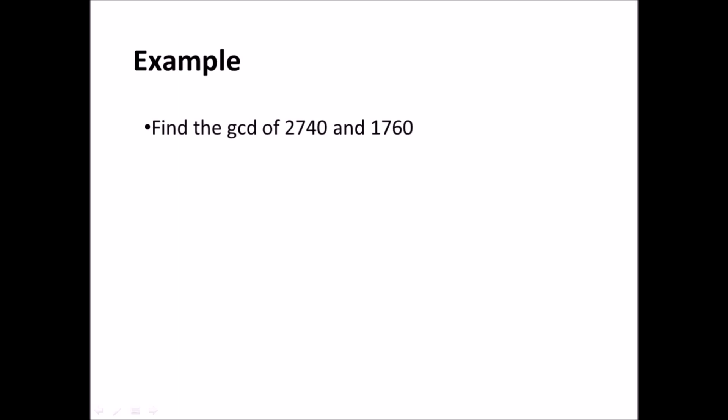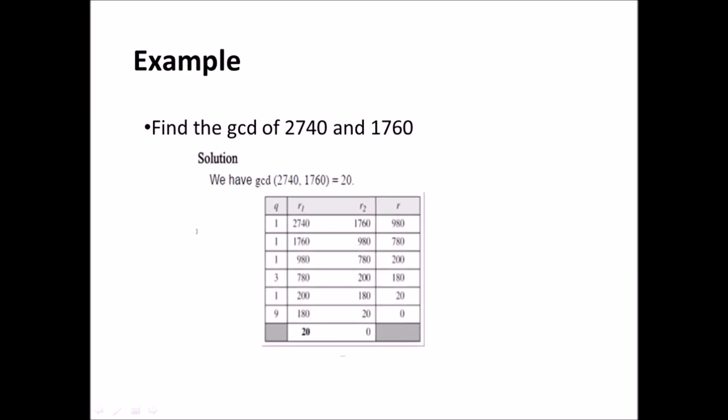We will solve a few examples for better understanding of the algorithm. Example 1: find the greatest common divisor of 2740 and 1760. Initially we have R1 equals 2740 and R2 equals 1760. In the first step, we divide R1 by R2; the quotient is 1 and the remainder R is 980. In the second step, we replace R1 by R2 and R2 by R; hence we have R1 equals 1760 and R2 equals 980. We divide R1 by R2; the quotient is 1 and the remainder R is 780. We continue these steps until R2 becomes 0; hence the answer is 20. We leave it to the viewer to find the GCD of 25 and 60.